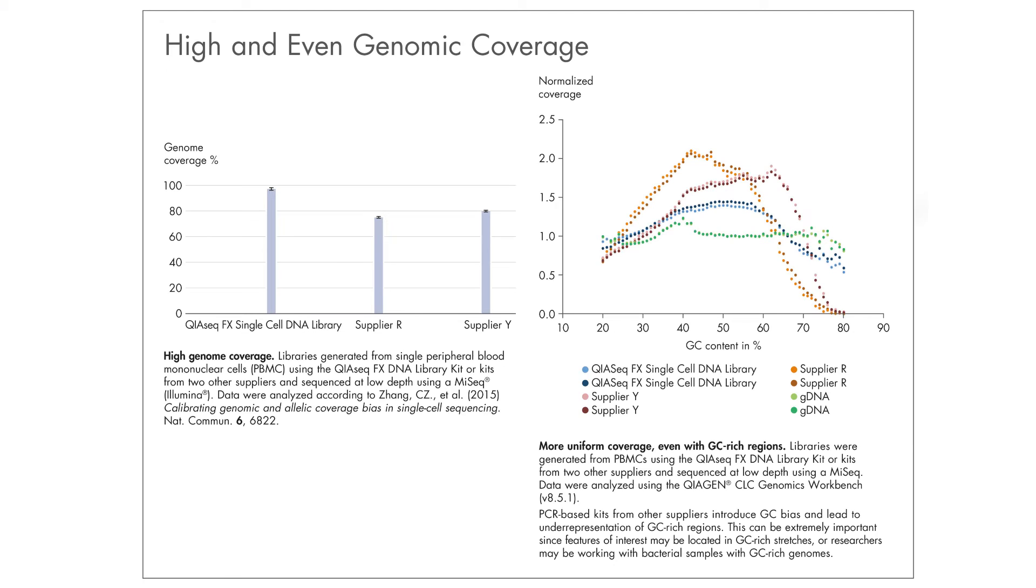High GC rich regions might be very important for people that are studying bacterial cells with high genome with a high GC content, and what we can see here is that with our QIAGEN FX single cell library kit we obtained an even genomic coverage that is very close to unamplified material.